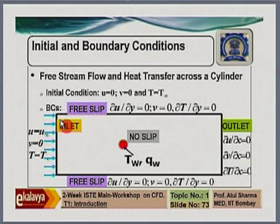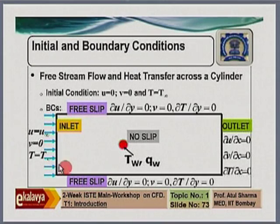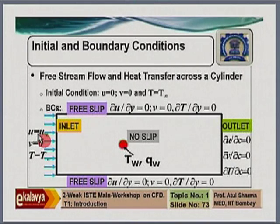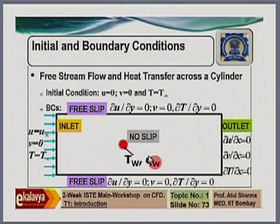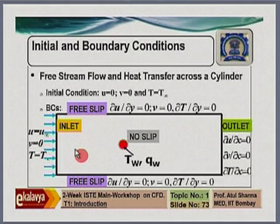To answer the question — what should be the position of the inlet boundary — this varies from problem to problem, so we have to do what we call a domain length independent study. We take a particular position, do one simulation, then increase the length. We start with a minimum size of the outer rectangle and keep increasing it, obtaining engineering parameters like lift force and drag force for each increment. Eventually, the difference between results should asymptote — that is what is called the domain length independent study.